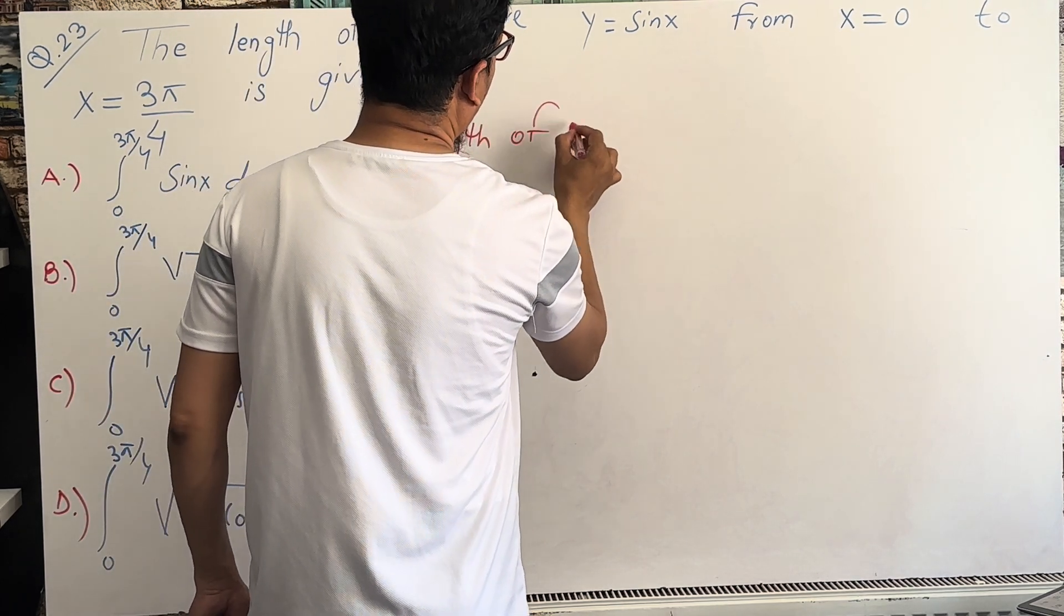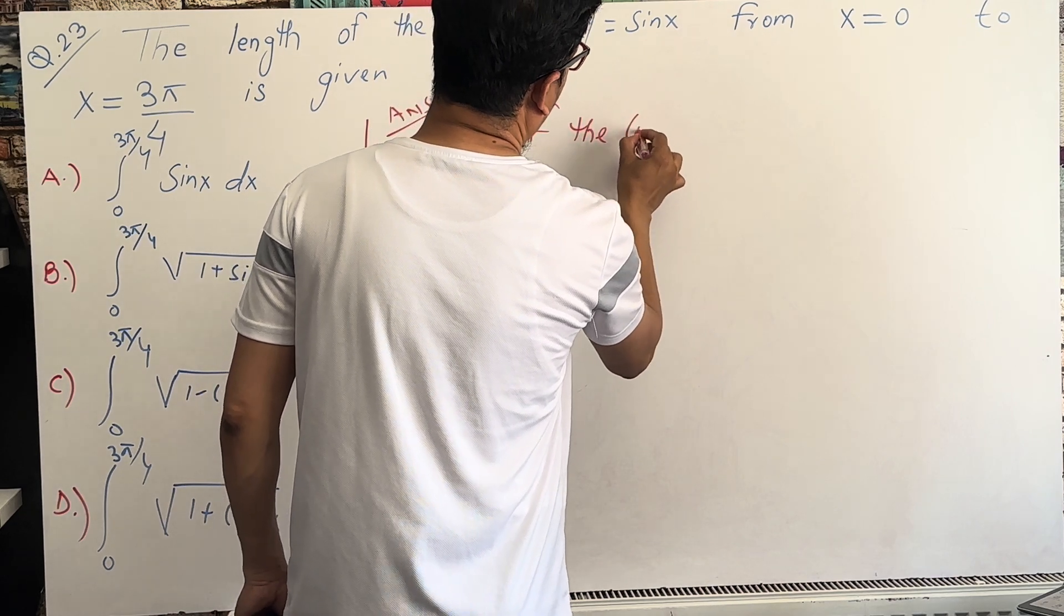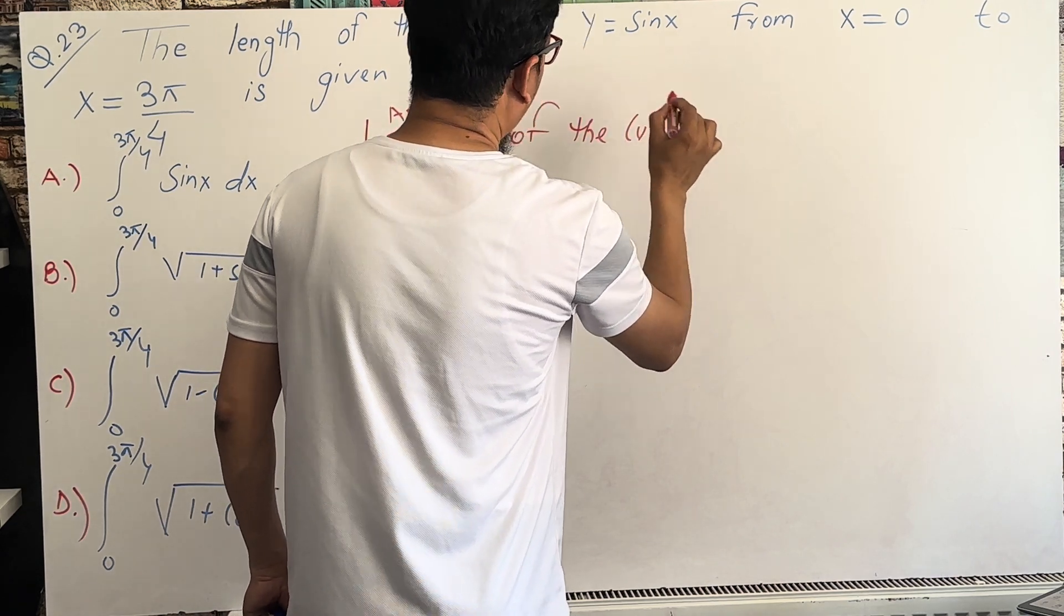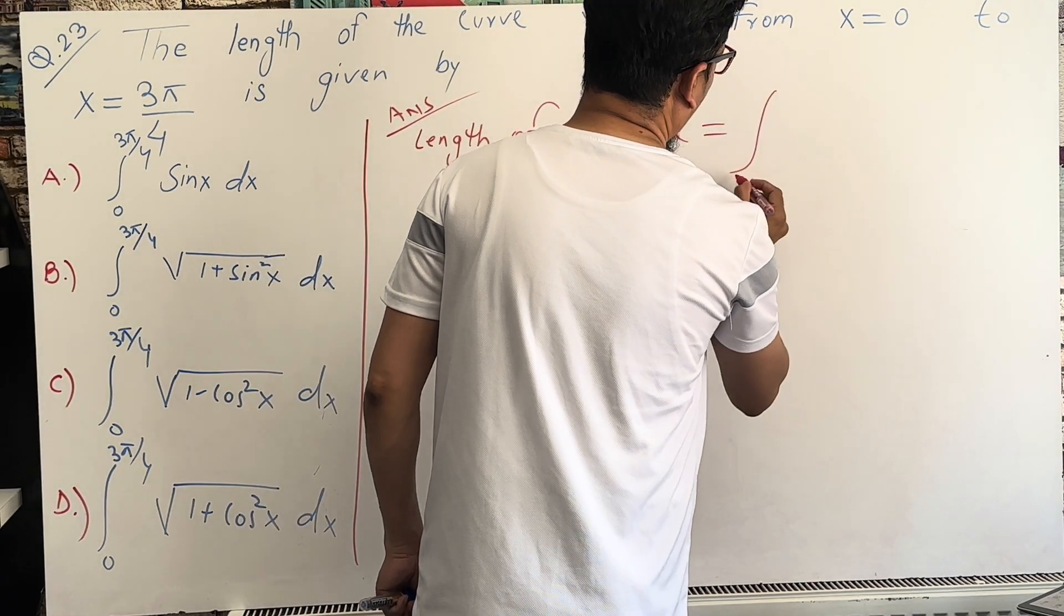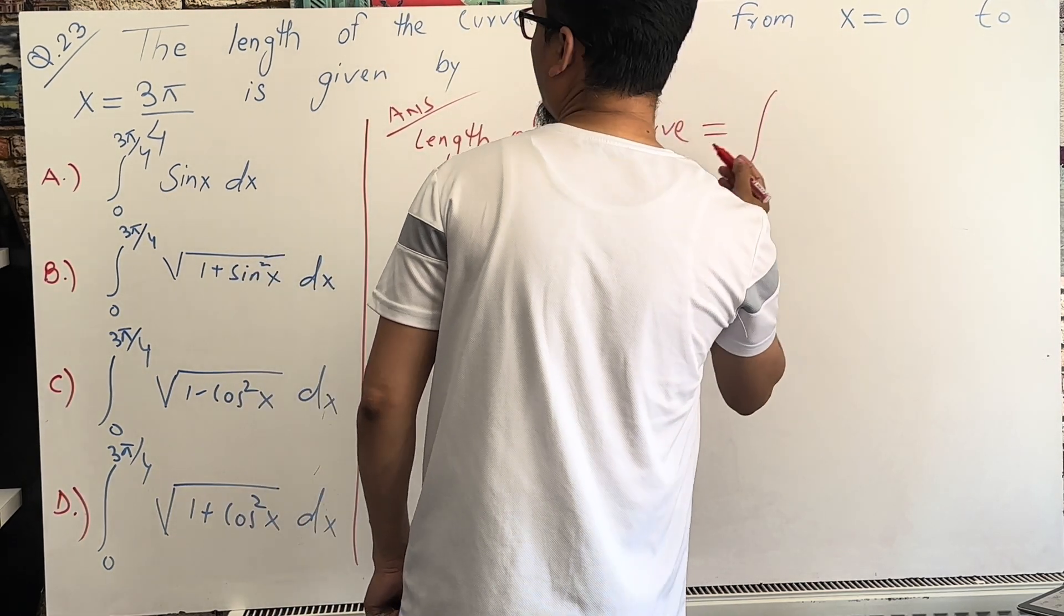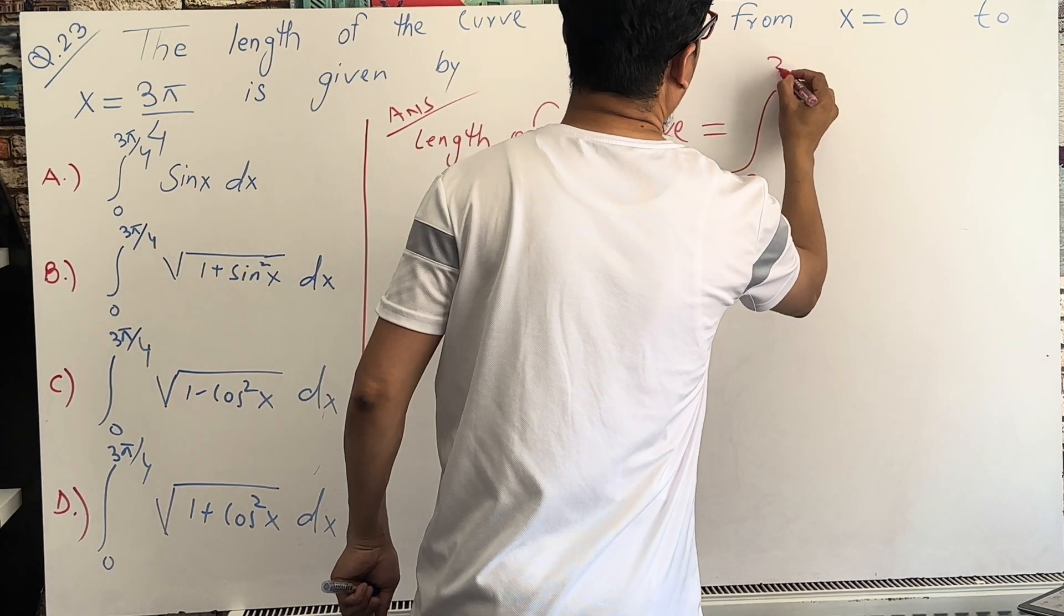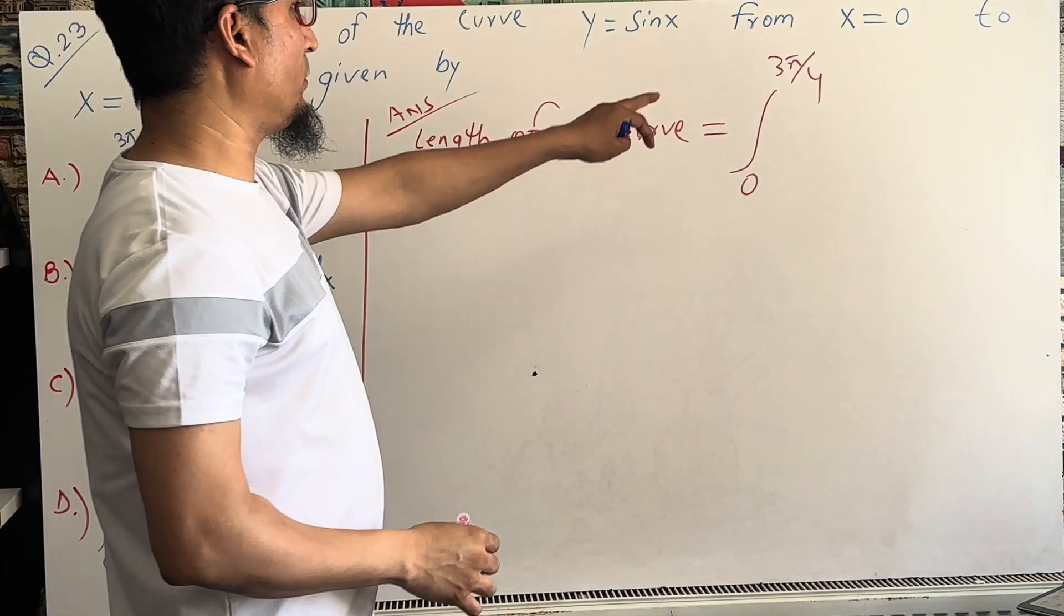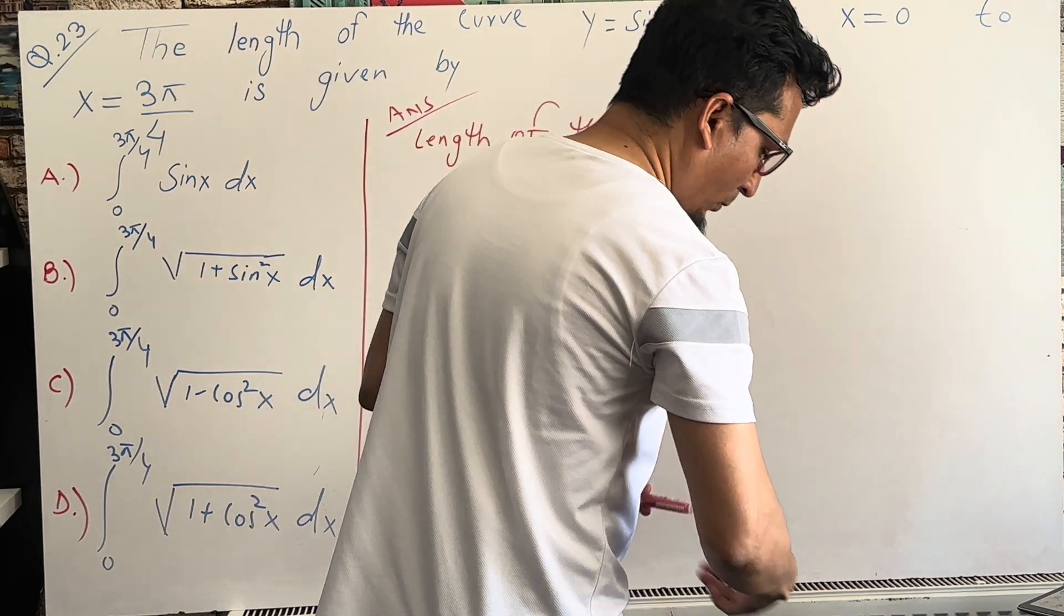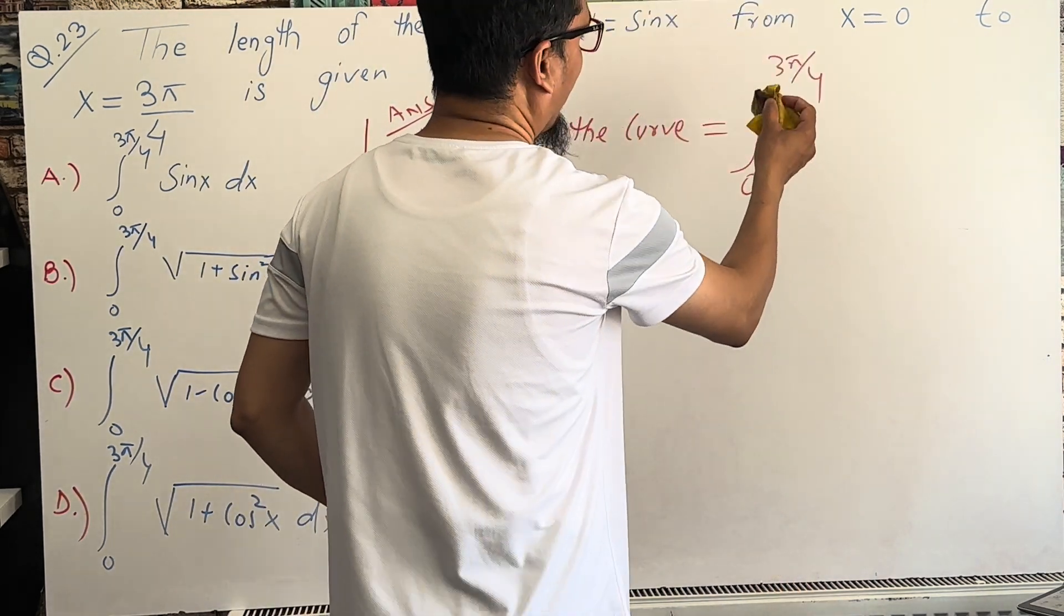The length of the curve from the lower limit and upper limit, from 0 to 3π/4. Let me write down the formula.